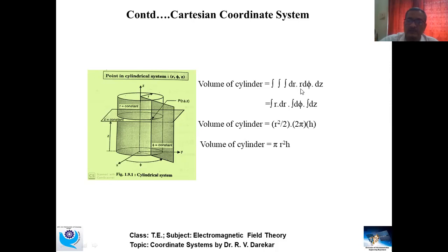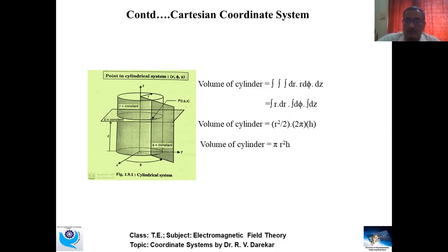As per the previous slide, wherever we have dφ we use r·dφ. Separating the integrations: integration r·dr, integration dφ, and integration dz. Substituting limits, integration of r·dr gives r²/2. The integration of dφ with limits 0 to 2π gives 2π. The integration of dz gives the height h of the cylinder. Therefore, the 2s cancel and we get the volume of the cylinder as π·r²·h.